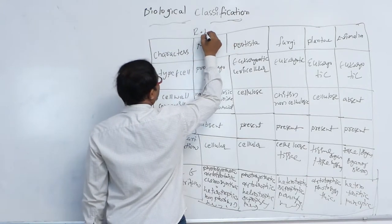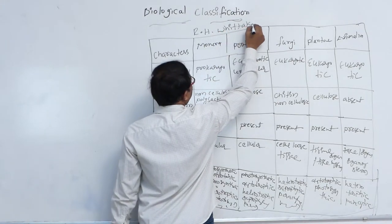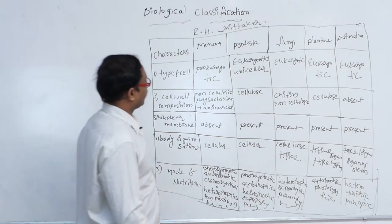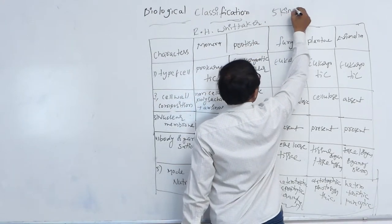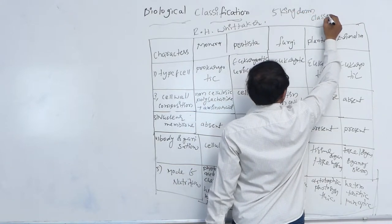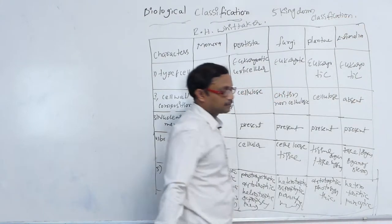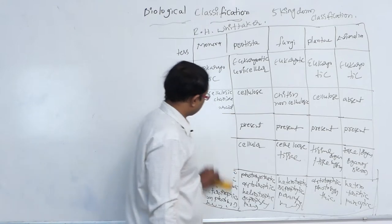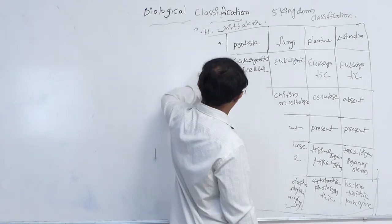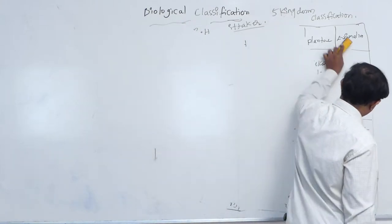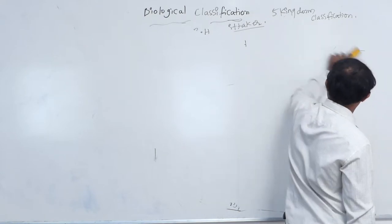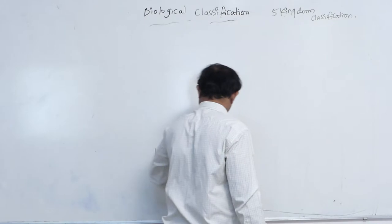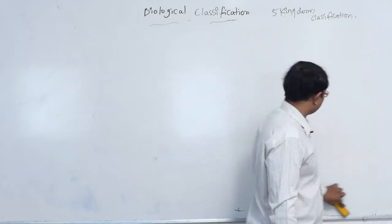R.H. Whittaker proposed the five kingdom classification. He differentiated between prokaryotes and eukaryotes, placed unicellular organisms in Protista, and differentiated the heterotrophic organism fungi. He provided a special kingdom to heterotrophic saprophytic organisms — fungi — and after that, plants and Animalia.